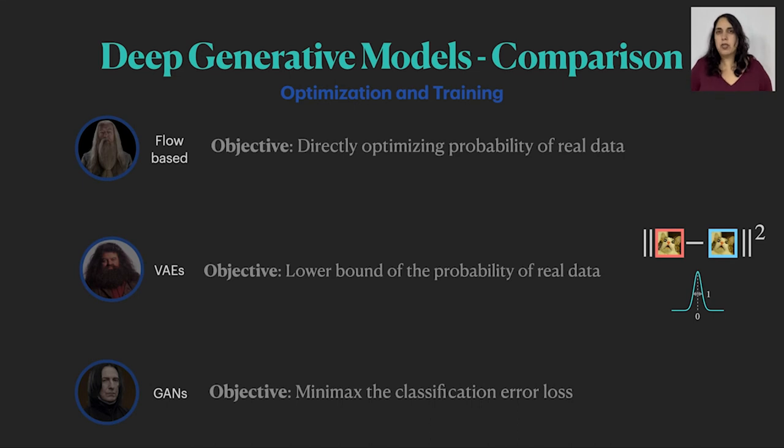One example of why this can be tricky is what happens if the discriminator is being trained too quickly. This way, no matter what the generator will try to do, it will keep getting the same feedback, that it's not good enough. And this is not productive. Without some good feedback, it can never learn what a good image looks like, and it will never converge.